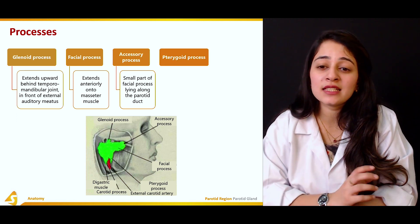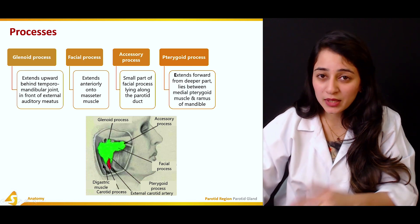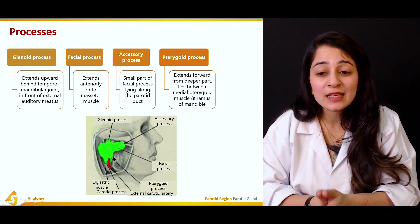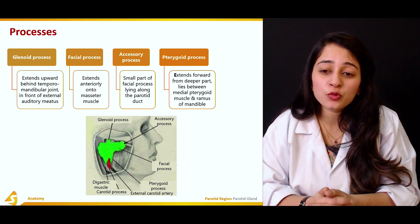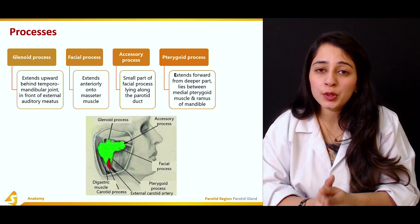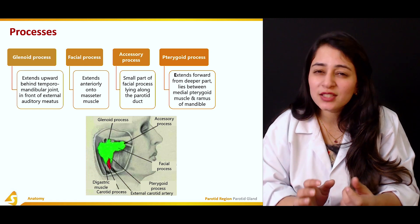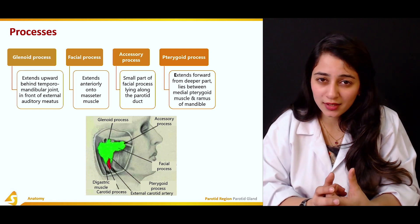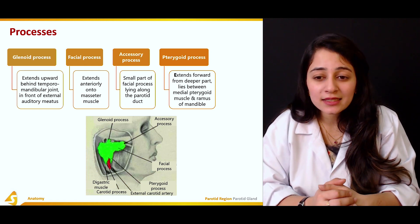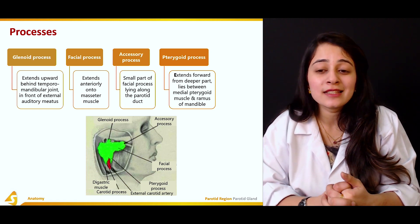The pterygoid process is present on the lower side of the gland. It extends forward from the deeper part and lies between the medial pterygoid muscle and the ramus of the mandible.